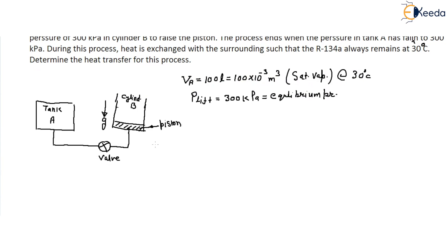First, identify the control mass system. If you say Tank A is the system, that is not correct because when the valve is open, mass leaks from Tank A into Cylinder B — so the mass in Tank A is not fixed. Therefore, Tank A alone is not a control mass system.